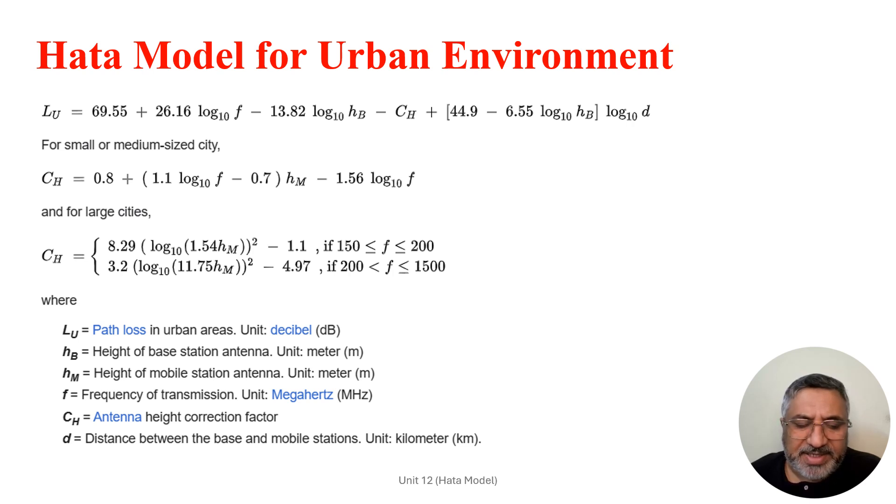HB is defined as the height of base station antenna, with units in meters. HM is defined as the height of the mobile station antenna, also expressed in meters.